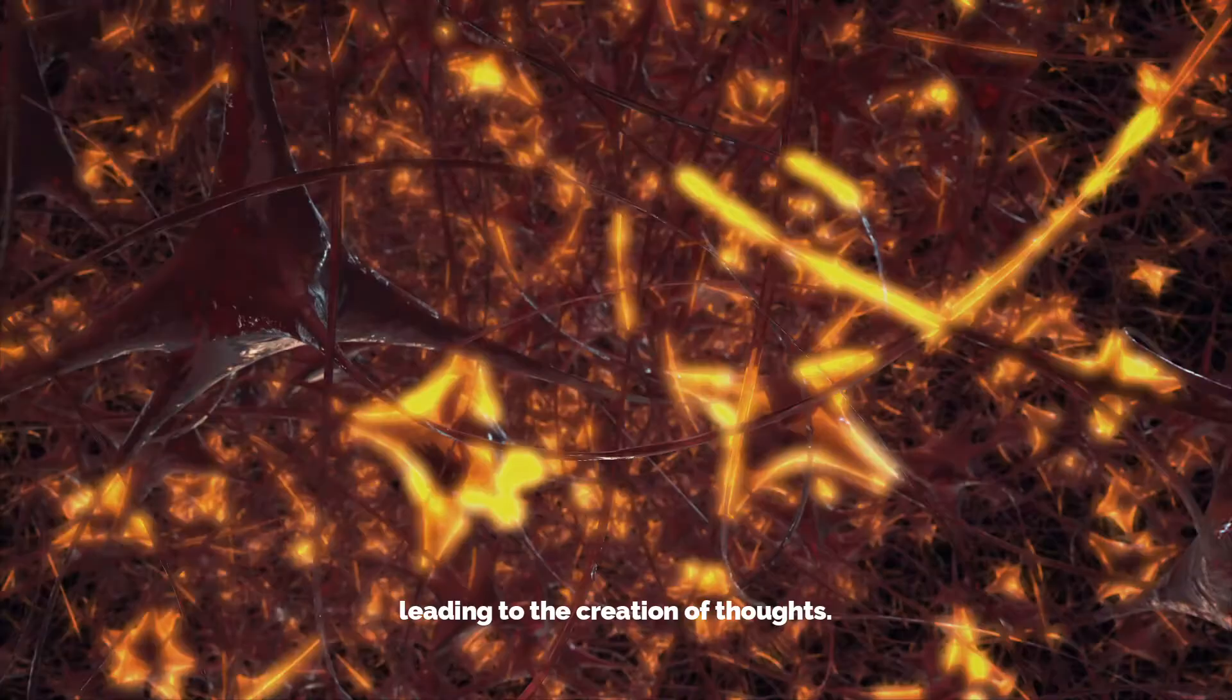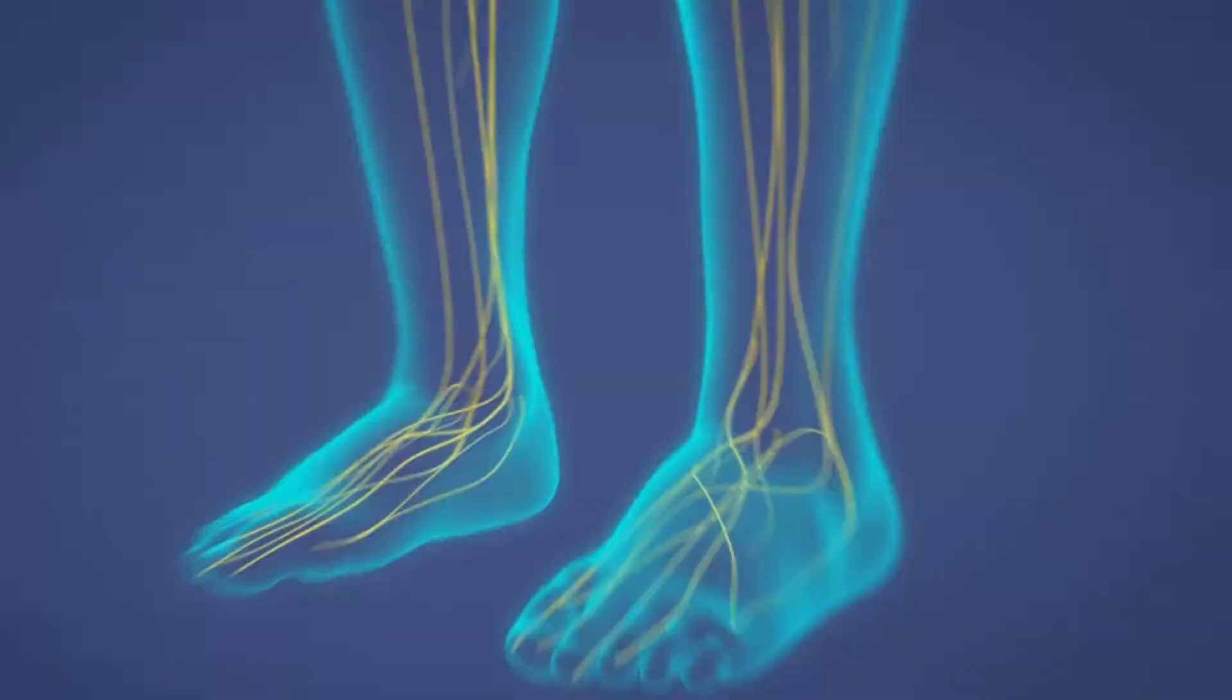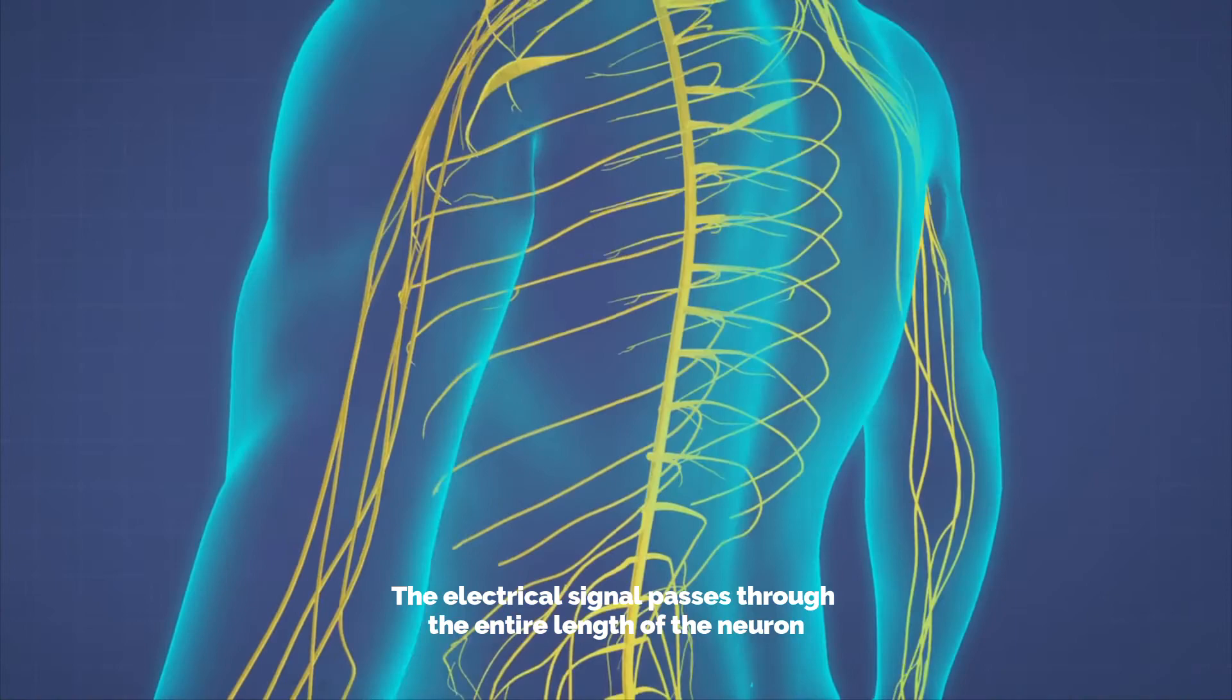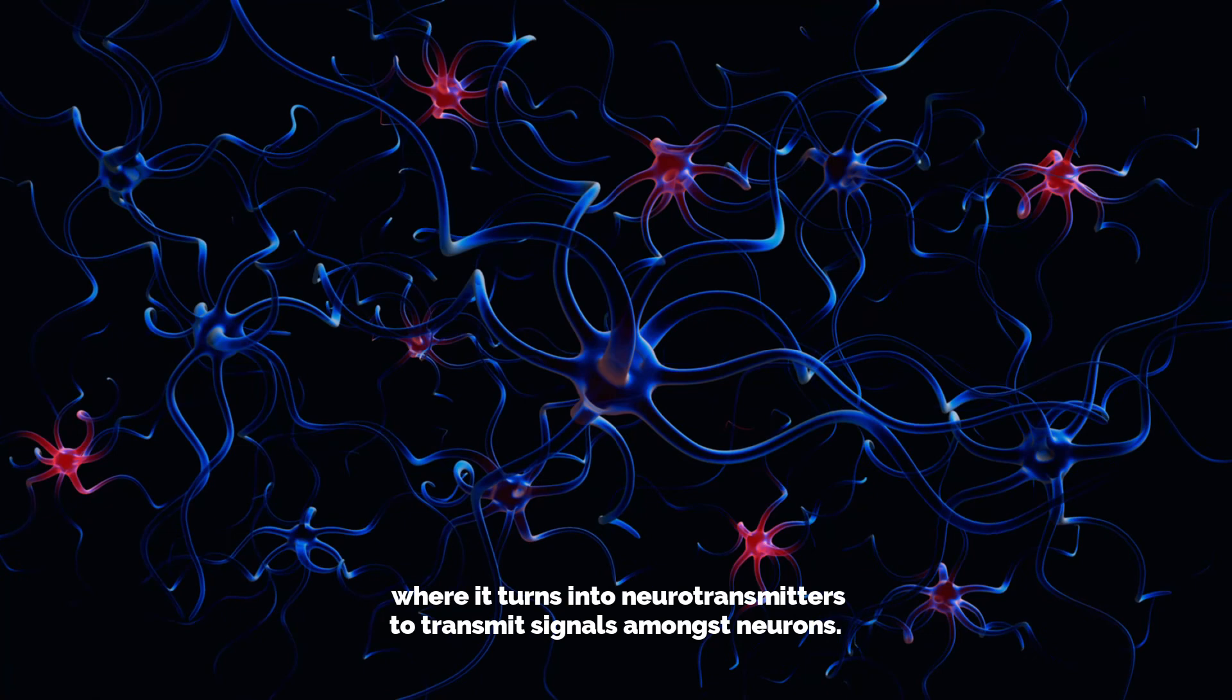The electrical signal passes through the entire length of the neuron, after which it turns into chemical energy where it becomes neurotransmitters to transmit signals amongst neurons.